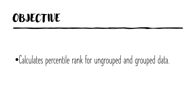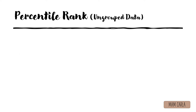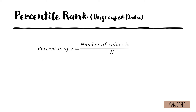Our objective for today's lesson is to calculate percentile rank for ungrouped and grouped data. Percentile rank is defined as the portion of scores in a distribution that a specific score is greater than or equal to. To calculate the percentile rank of ungrouped data, we use the formula: percentile of x equals number of values below x over n times 100, where n is the total number of data.